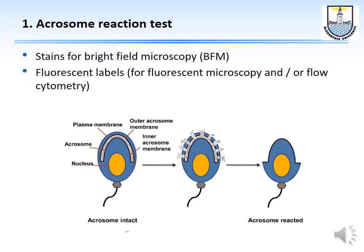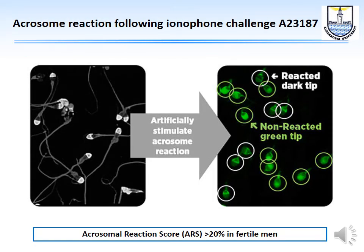The acrosome reaction test: the sperm head contains an acrosome with enzymes acrosin and hyaluronidase. When sperm meets the egg, it releases these — the acrosome reaction. We can test this by staining with bright field microscopy, fluorescent labels, or flow cytometry. To stimulate the reaction, calcium ionophore A23187 or progesterone is added. We count reacted spermatozoa under fluorescent microscopy and require a score of more than 20% for the man to be declared fertile.